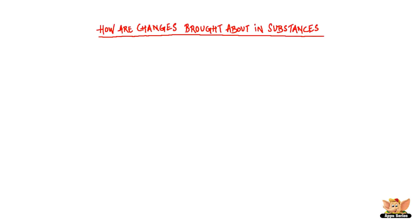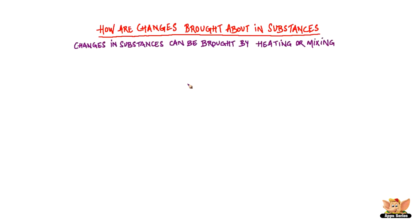How are changes brought about in substances? Changes in substances can be brought about by heating or mixing. Let's see what changes take place in some substances as we heat them or mix them with other substances.